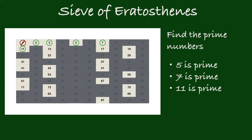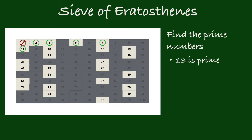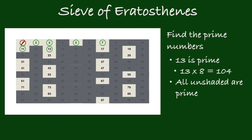Circle 11 since it is prime, and shade all the remaining multiples of 11 if there are any left. Now here's a little logical trick — all the remaining numbers are prime. You don't even need to work out the multiples. Notice that all the multiples of 2, 3, 5, 7, and 11 are already cancelled.